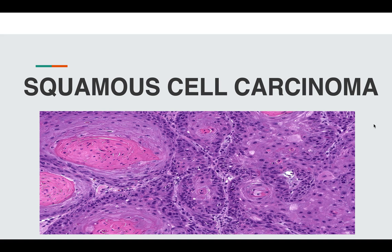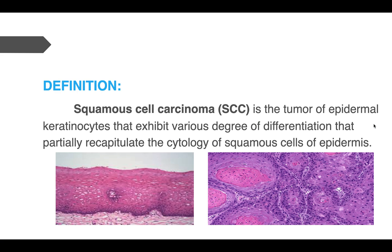In this video we'll discuss squamous cell carcinoma. The squamous cell carcinoma we're discussing is mostly pertinent to skin only. Squamous cell carcinoma can originate anywhere — in the lungs, in the cervix — but here we're just talking about the skin. The basic morphology will remain the same. So what is squamous cell carcinoma? It is a tumor of epidermal keratinocytes.